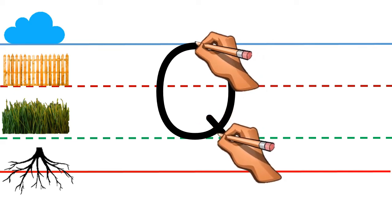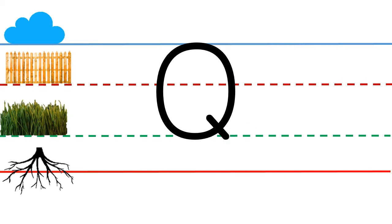Put your pencil in the middle of the fence and grass line. Make a slant. Try again, kids.